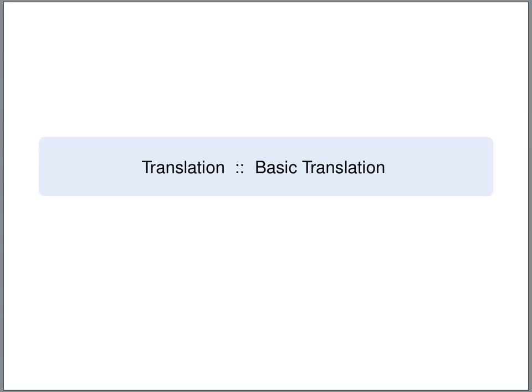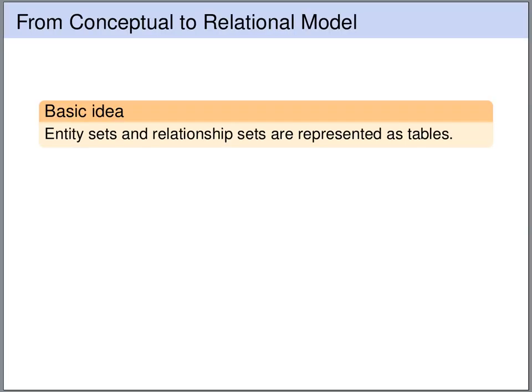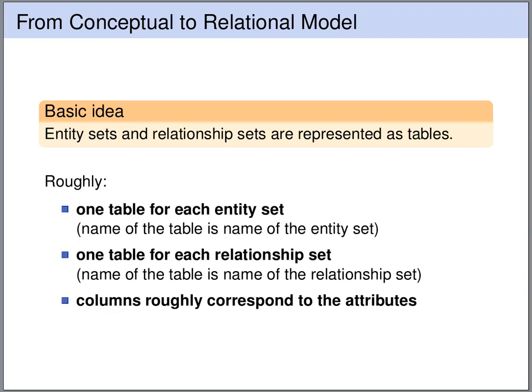We start with the basic translation. We will represent entity and relationship sets as tables. Roughly, we will have one table for every entity set and one table for every relationship set. The name of the tables will correspond to the name of the entity or relationship set, and the columns are roughly the attributes of the entity sets or the relationship sets.